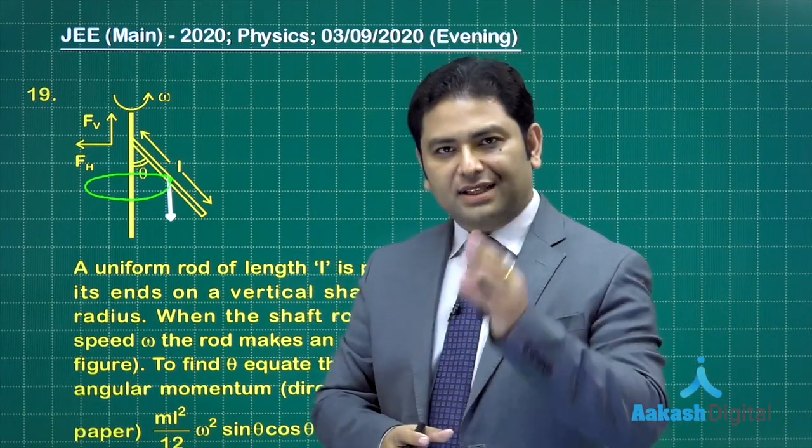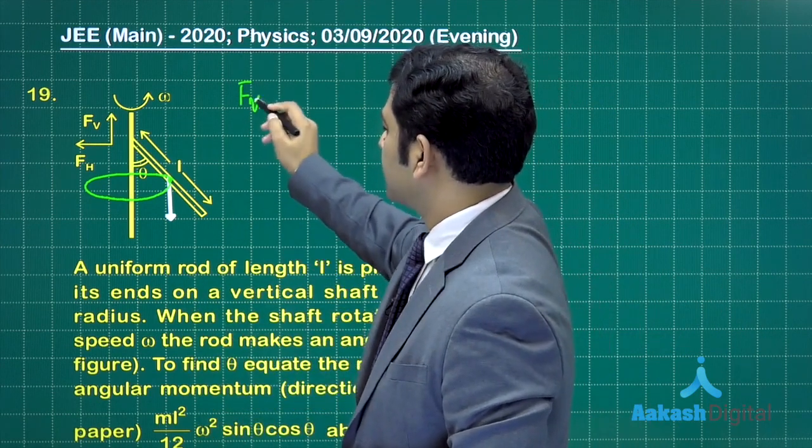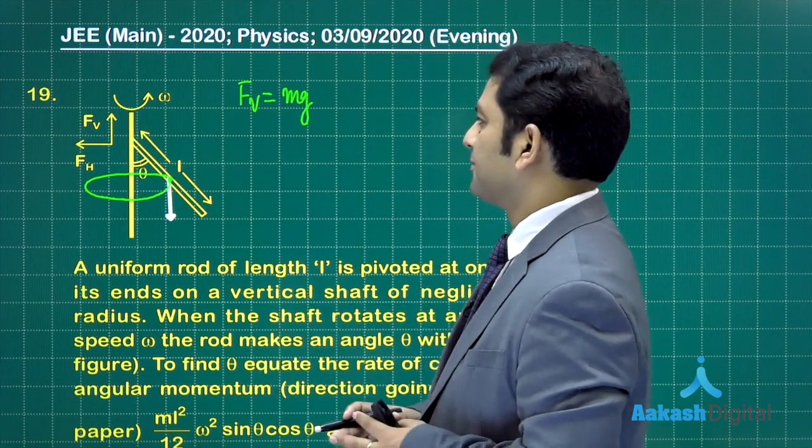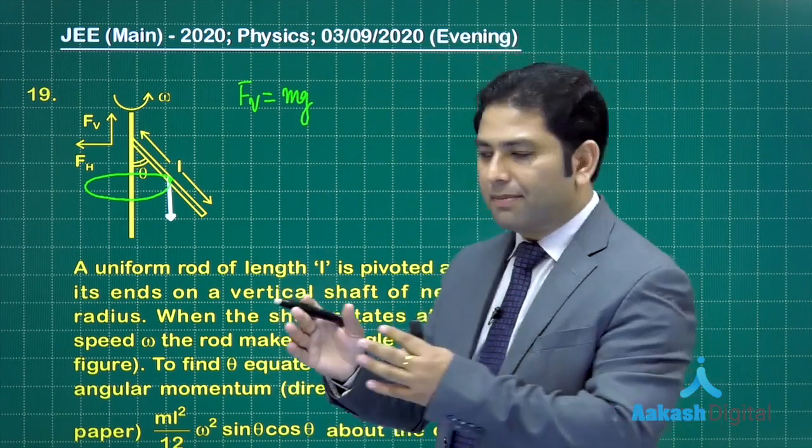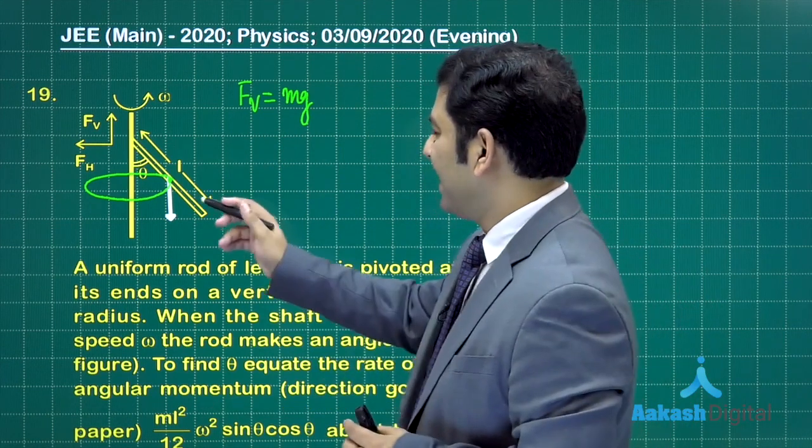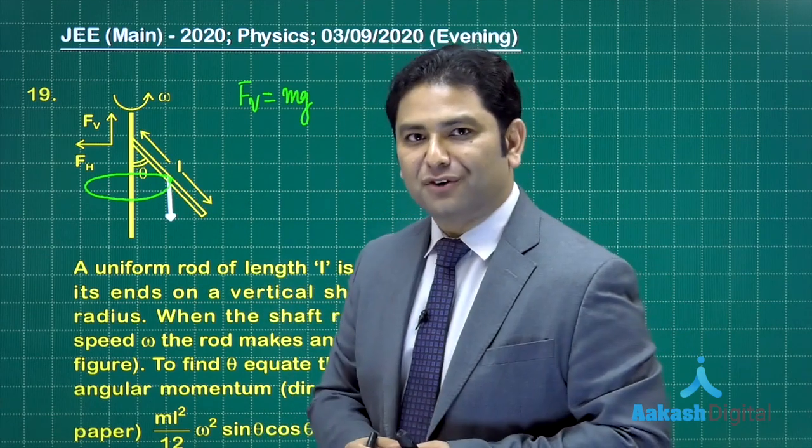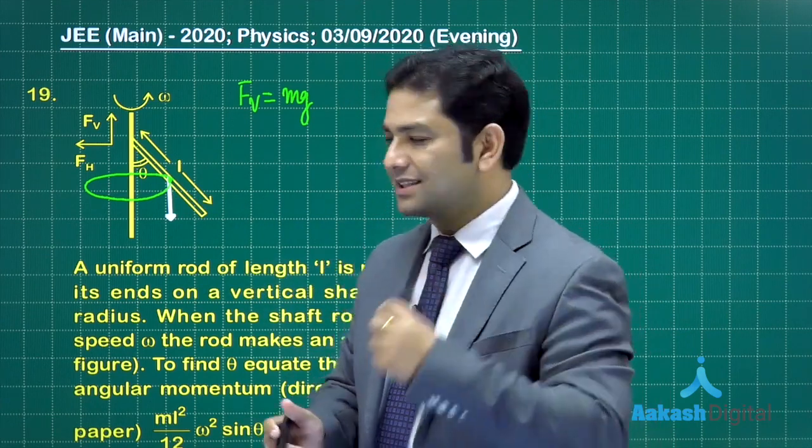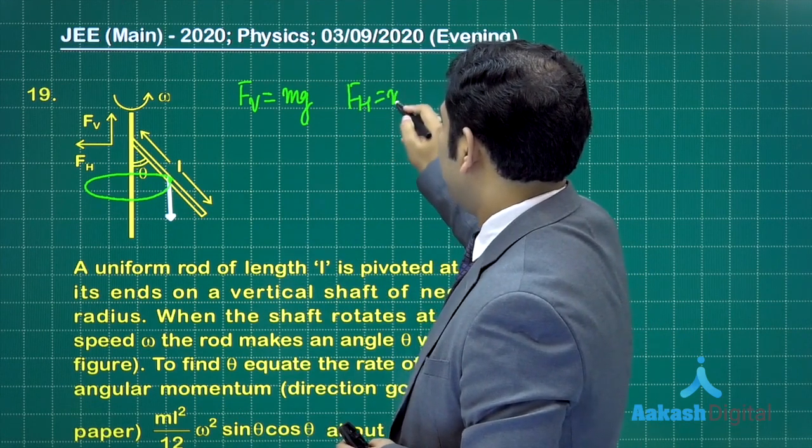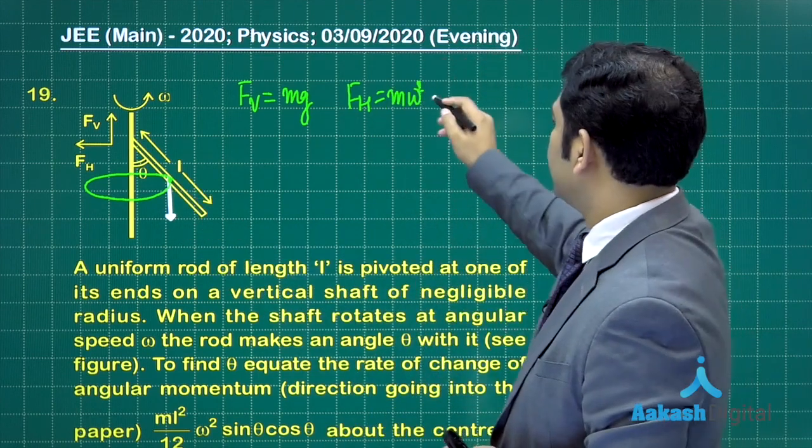What about FH? FH is in fact the sole agent of centripetal force because the center of mass is moving in a circle. So FH is M omega square times the radius, which is L by 2 sin theta.